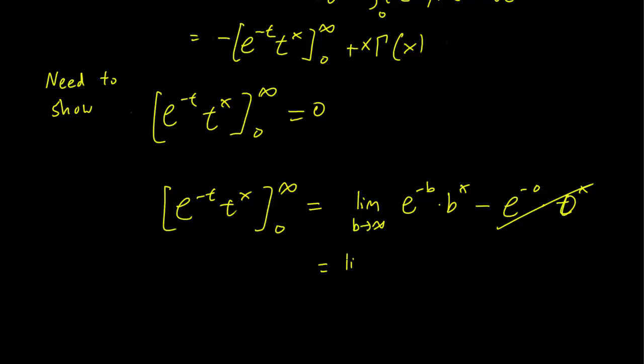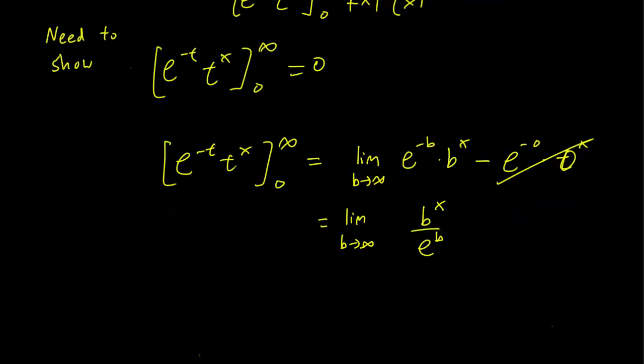And so we need to calculate this limit, b to the x over e to the b. And from here, you just note that exponential functions always increase faster than polynomial functions. Remember x is a constant here. So this is just going to be equal to 0 because the denominator is going to grow a lot faster than the numerator.